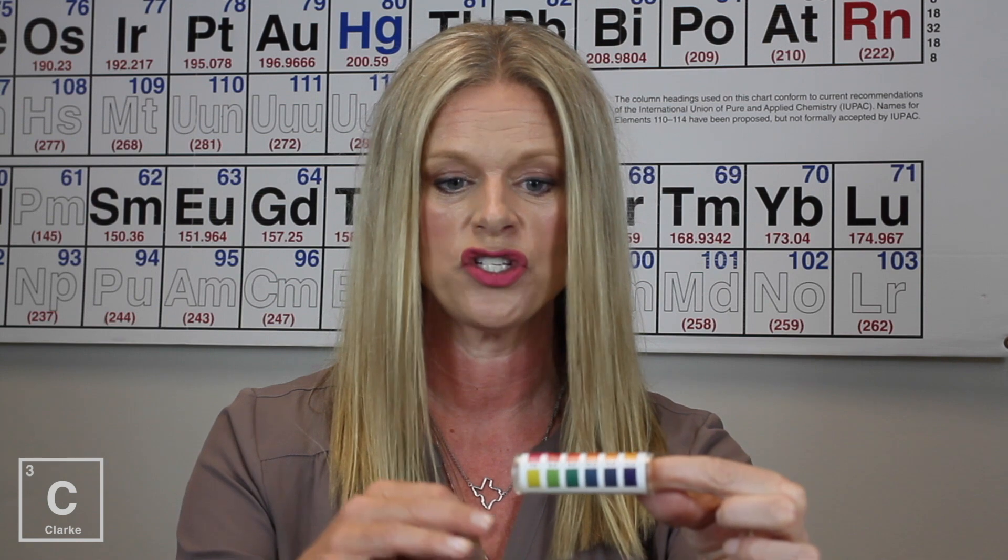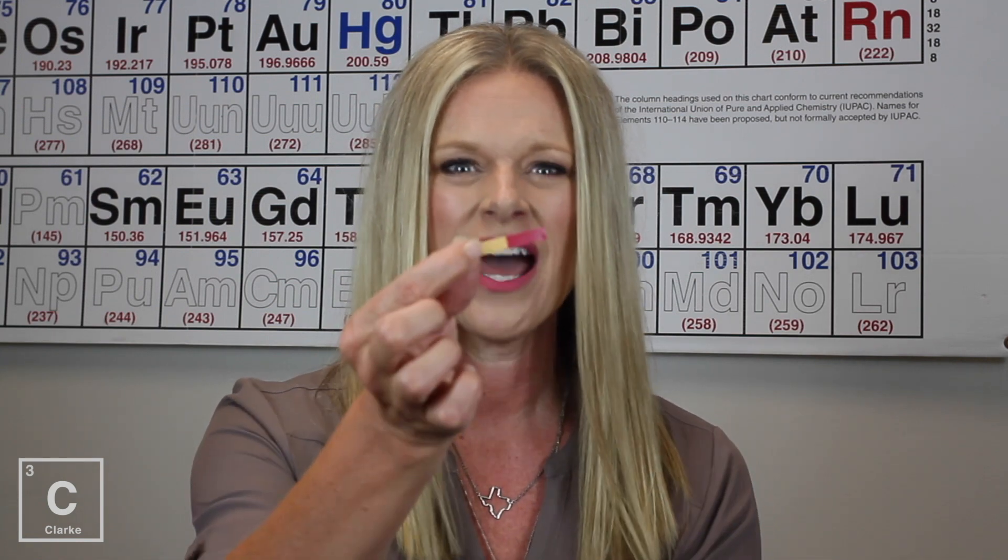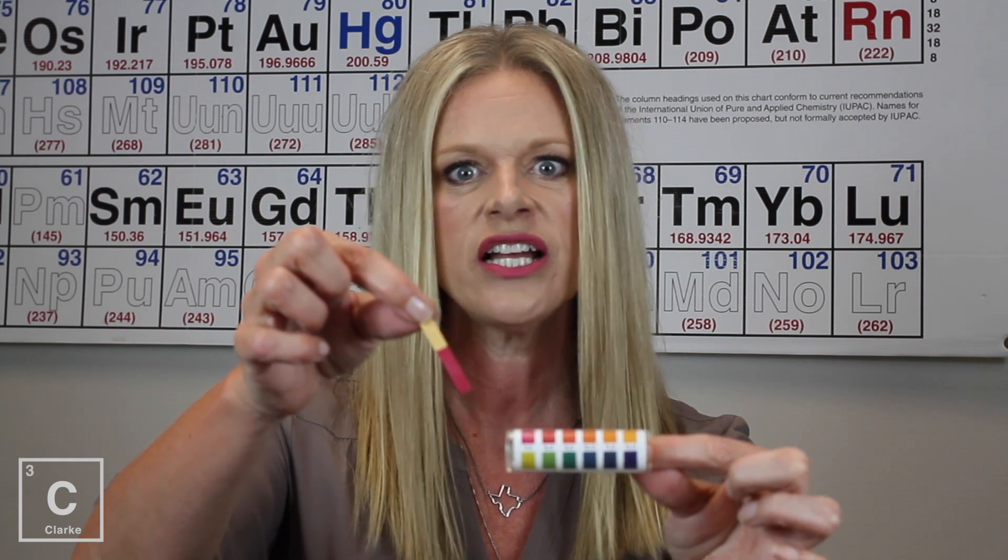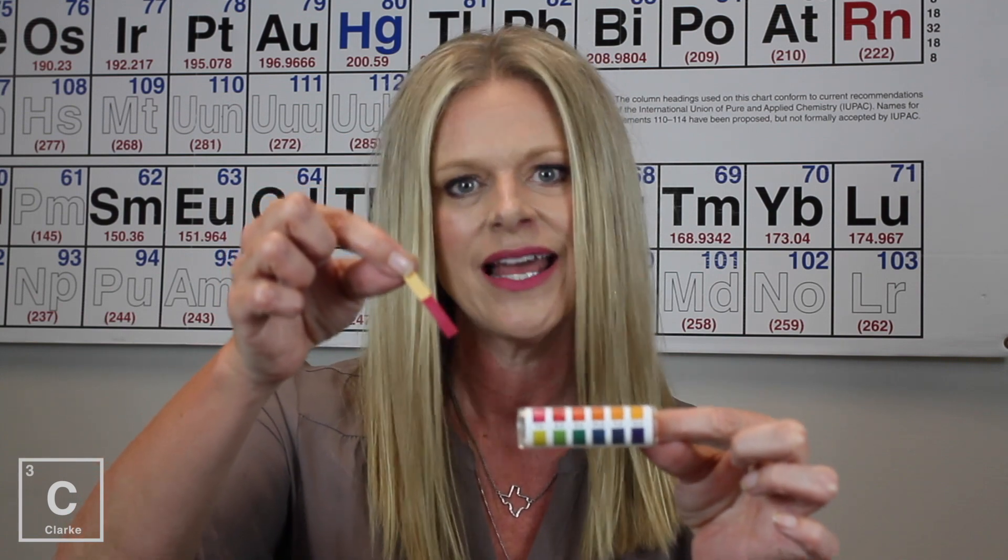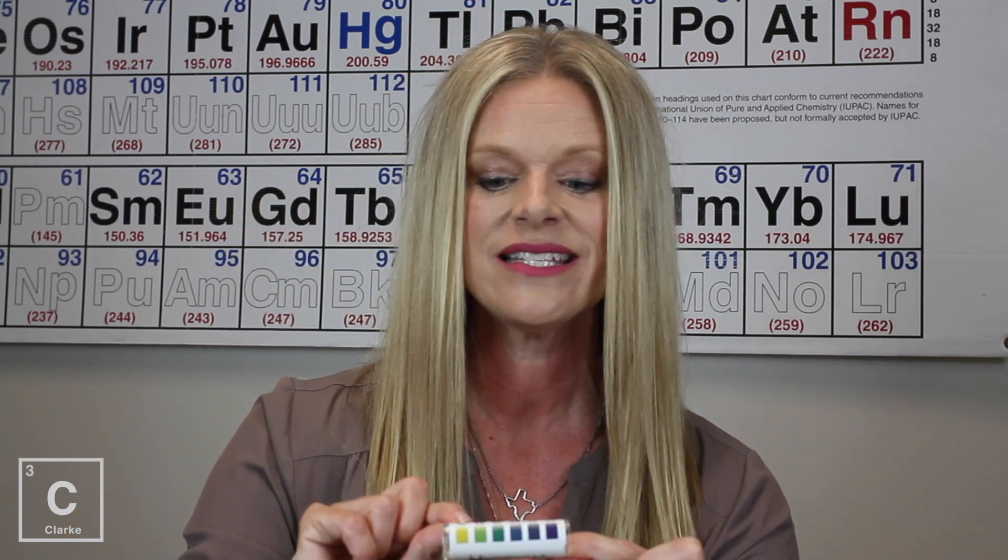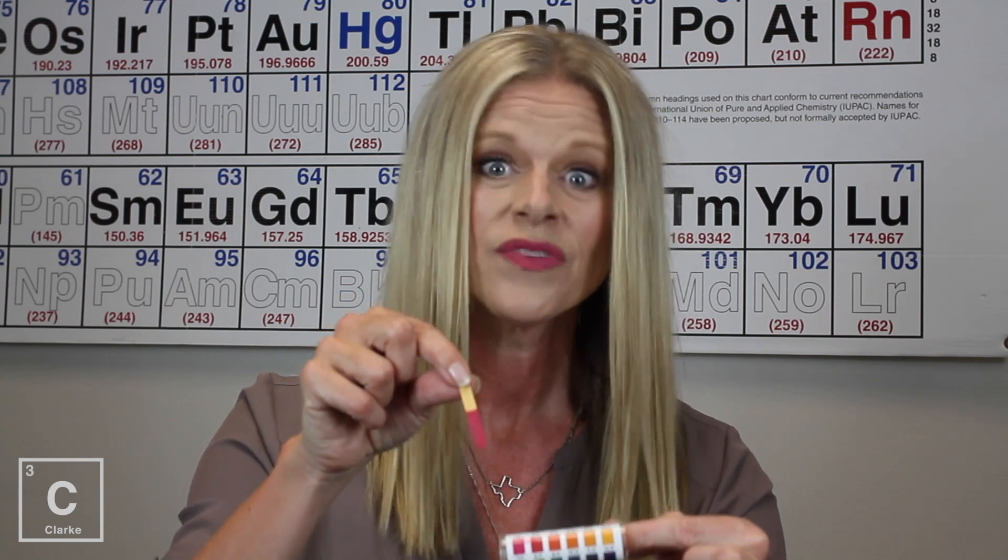We've got 1 through 12 on this tester. The pinks are going to be very acidic. Then it's going to kind of be this yellow color when you get a little bit neutral, and then it's going to go from green to purple for base. Very clear to see hydrochloric acid is an acid, and it is, gosh, between a 1 and a 2, that's very acidic.